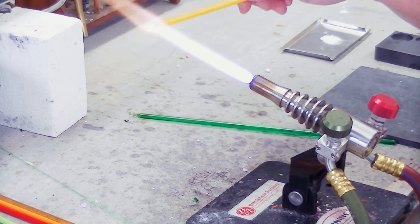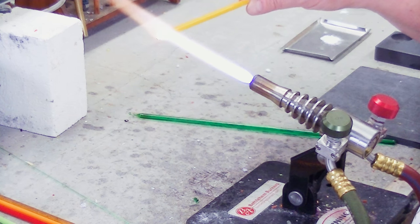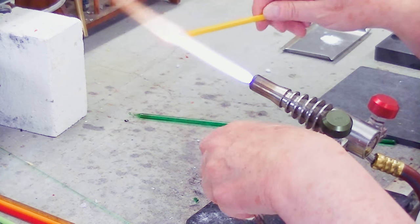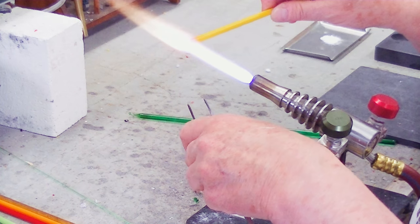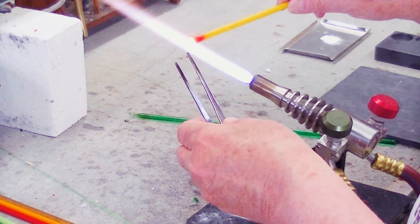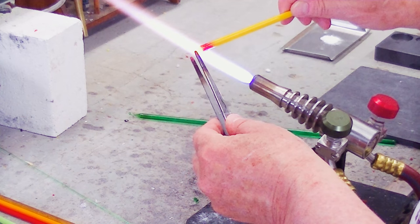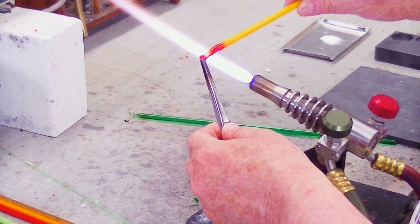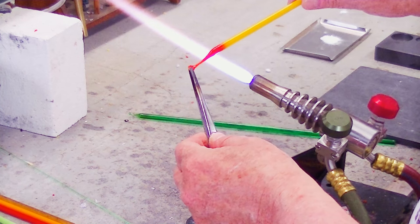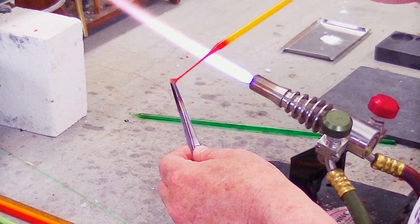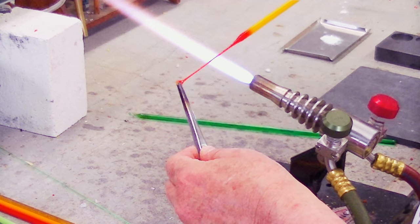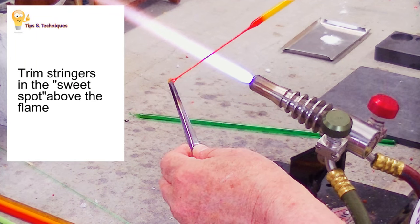Now I'm pulling a medium yellow glass stringer. You'll notice that when I trim that glass, I just reintroduce the stringer briefly into the flame, and then raise it above the flame into the sweet spot, which is where the radiant heat will cut the stringer and leave a nice, sharp little point there.